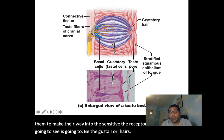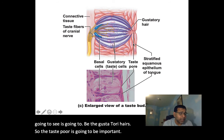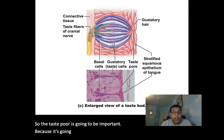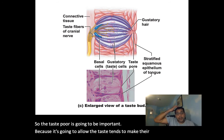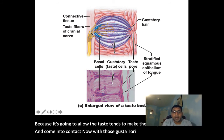Looking at one taste bud's structure, we can see first a taste pore. The taste pore is a neck-like opening to each taste bud, allowing taste stimuli to make their way to the sensitive receptor portion — the gustatory hairs.